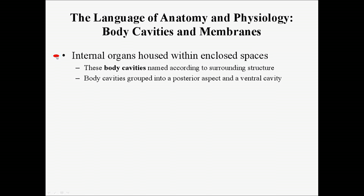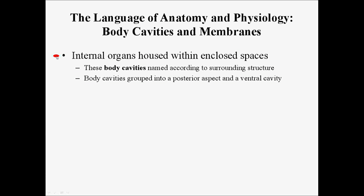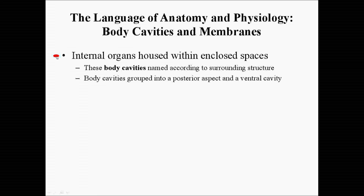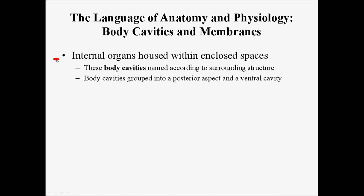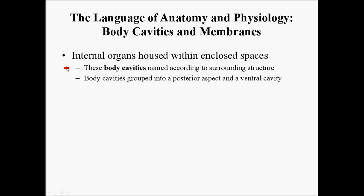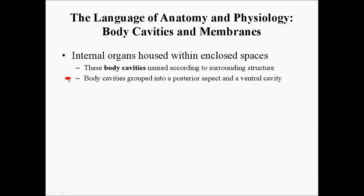Welcome to lecture 6. In lecture 6 we are going to talk about body cavities and membranes. The thing to keep in mind is that internal organs are housed within enclosed spaces of the body. These spaces are called body cavities, and these body cavities are named according to the surrounding structure. They can be grouped into either a posterior aspect and a ventral cavity.